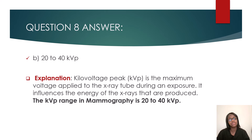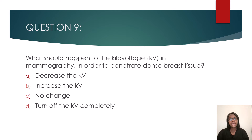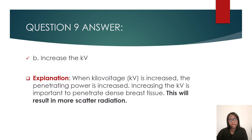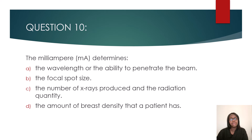Question nine: what should happen to the KVP in mammography in order to penetrate dense breast tissue — decrease the KVP, increase the KVP, no change, or turn off the KVP completely? The answer is increase the KVP. When kilovoltage is increased, the penetrating power is increased. However, increasing the KVP will result in more scattered radiation — keep that in mind.